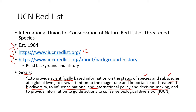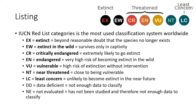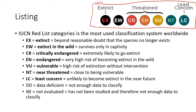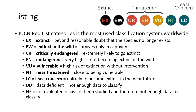These are their categories for conservation status, and it is the most widely used classification system in the world. I think it's important to know because these are what you will see when you look at different species. Even if you go onto Wikipedia and search for giant panda, you're going to see something that looks very much like this — they'll show where the giant panda falls on this scale.